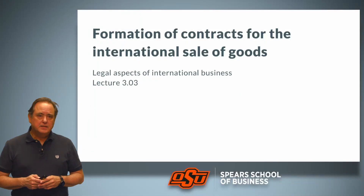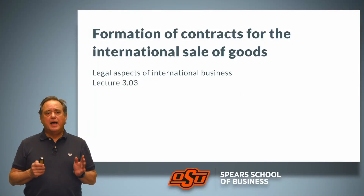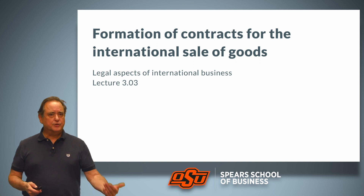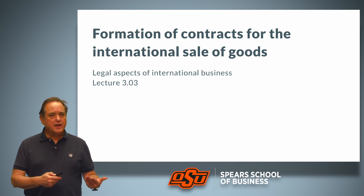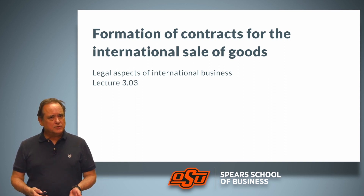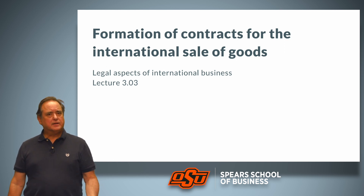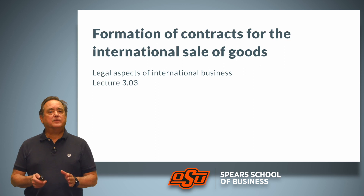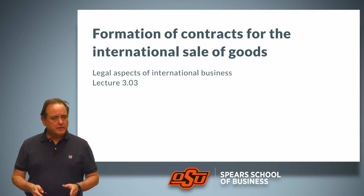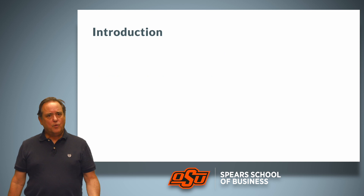Welcome back. We talked about how a contracting system has to do three things: it must tell us what is a valid contract, it must provide rules for the performance of that contract, and it must provide a remedy in the event a party breaches the contract. We start with the first aspect — what is a valid contract — and to understand that, we have to look at how contracts for the international sale of goods are formed.